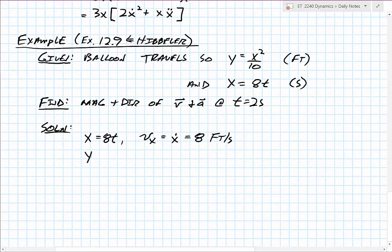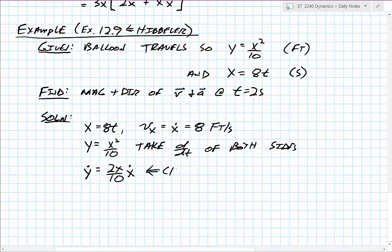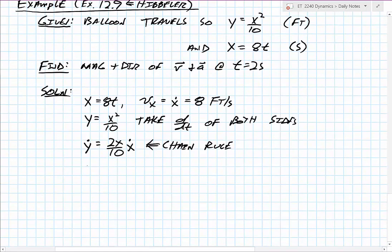For y, I know y equals x squared over 10. Taking d/dt of both sides: the left side gives y-dot, and on the right side the derivative of x squared over 10 gives 2x over 10, but because I'm differentiating with respect to time I must apply the chain rule and multiply by x-dot. So y-dot equals (2x over 10) times x-dot, which simplifies to (x over 5) times velocity in x. Don't forget the chain rule piece — it's easy to drop and get lost.